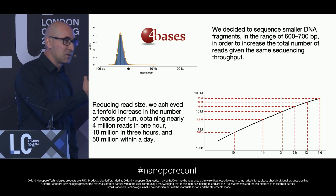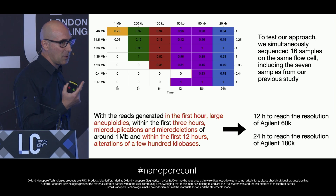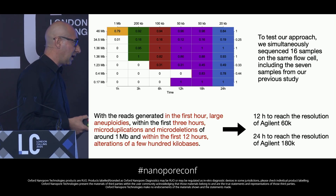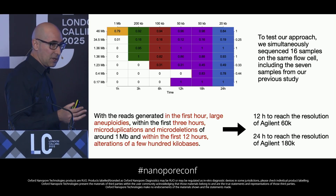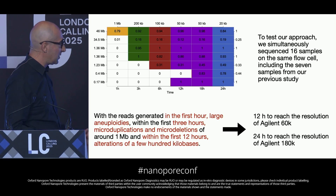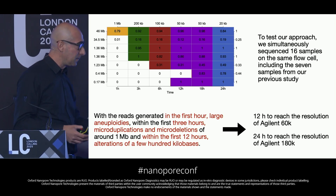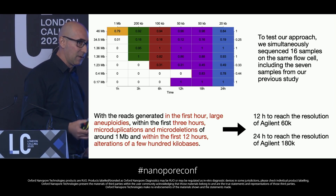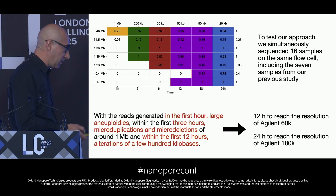To stress-test our approach with short reads, we sequenced in a single PromethION flow cell 16 samples, including the seven samples from our previous work. We demonstrated that with data from the first hour we can identify large aneuploidies; with data from the first three hours, micro-duplications; with data from the first 12 hours, we reach the resolution of an Agilent 60K array; and with data from the first 24 hours, we can predict the level of mosaicism for small CNVs, reaching the resolution of an Agilent 180K CGH array.